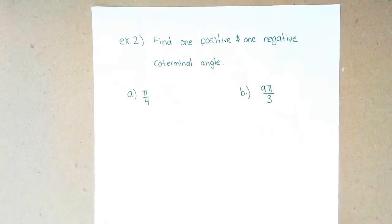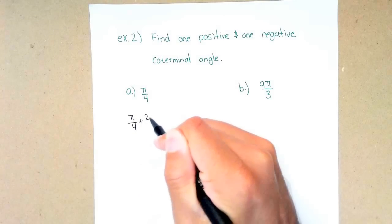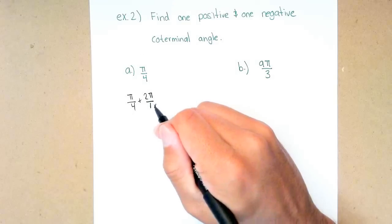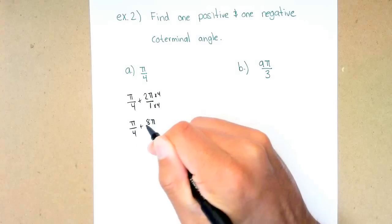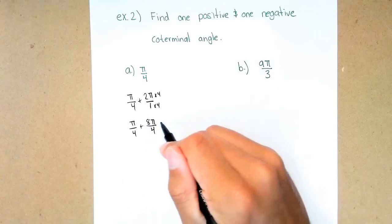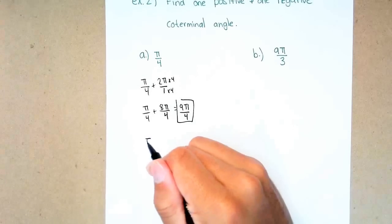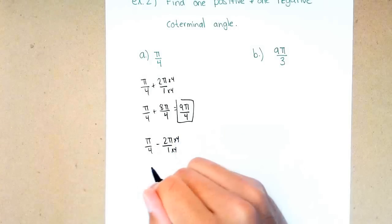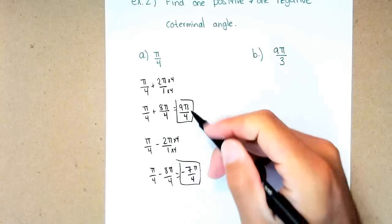What happens when it's in radians? You're going to add 2 pi and subtract 2 pi. For pi over 4 plus 2 pi, you need an LCD between 4 and 1, which is 4. Multiply 2 pi over 1 by 4 over 4 to get 8 pi over 4. So pi over 4 plus 8 pi over 4 equals 9 pi over 4 — that's the positive coterminal angle. For the negative: pi over 4 minus 2 pi becomes pi over 4 minus 8 pi over 4, which simplifies to negative 7 pi over 4. That's the positive and negative coterminal angle pair.